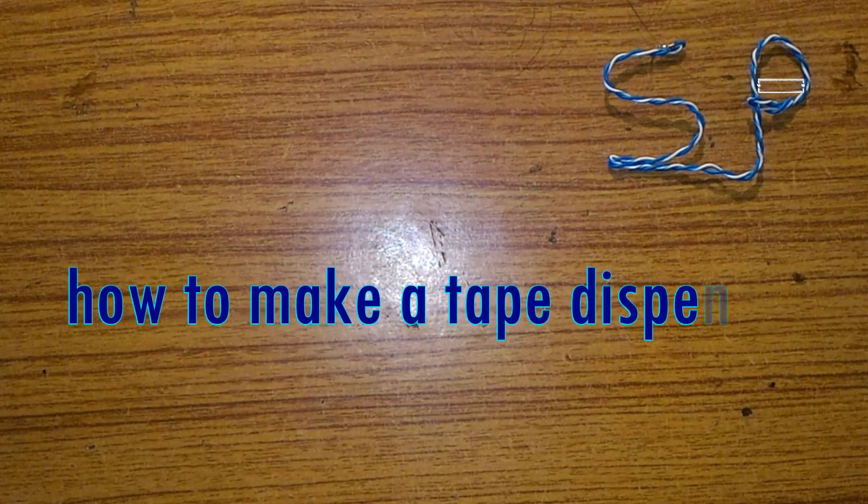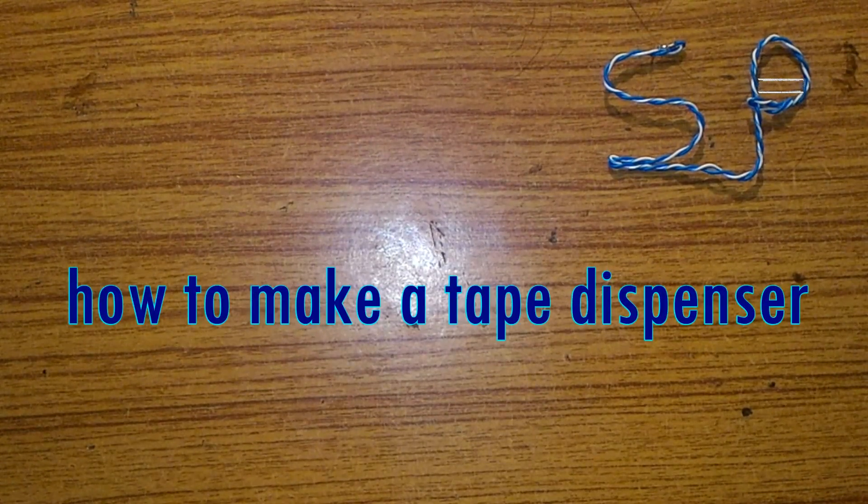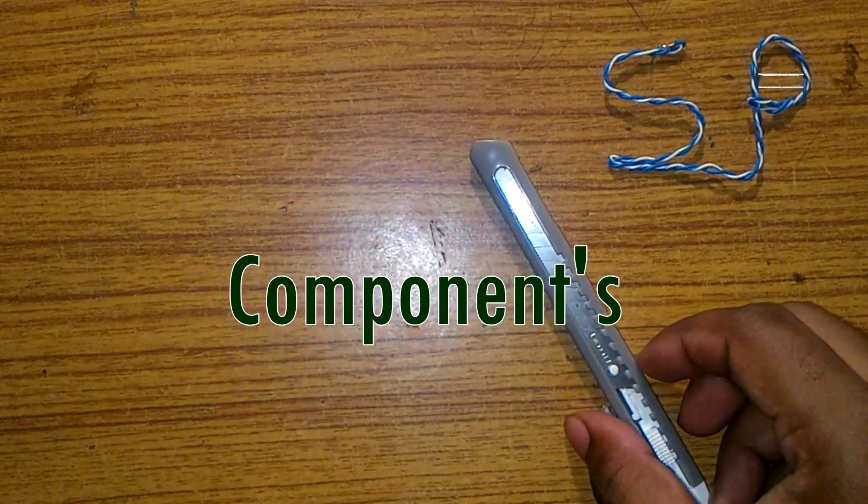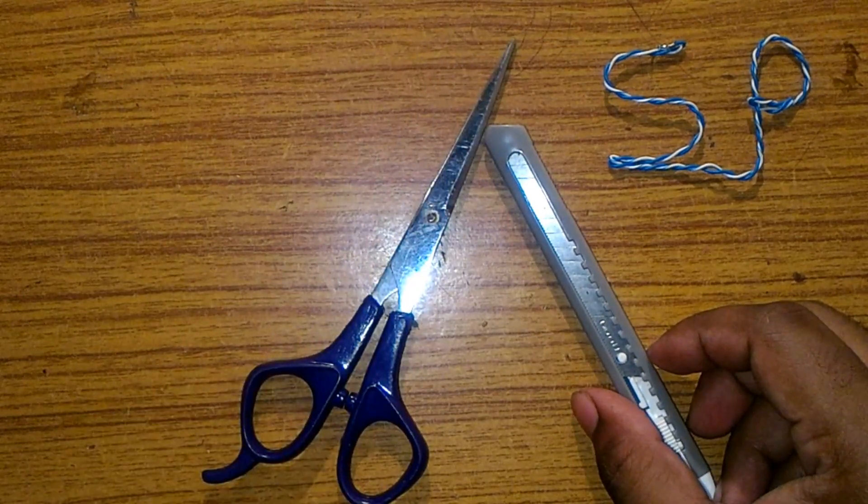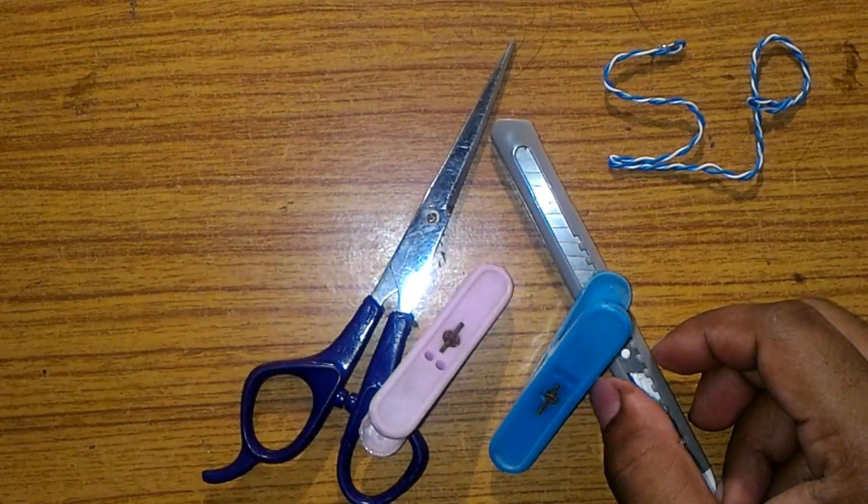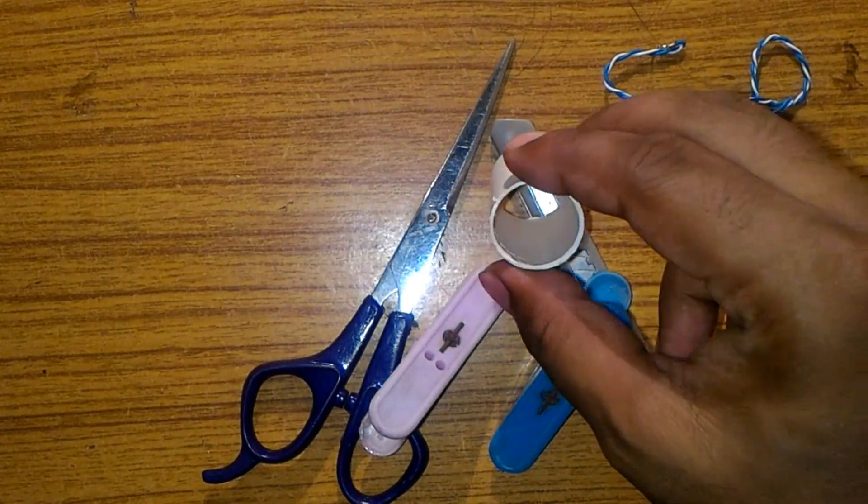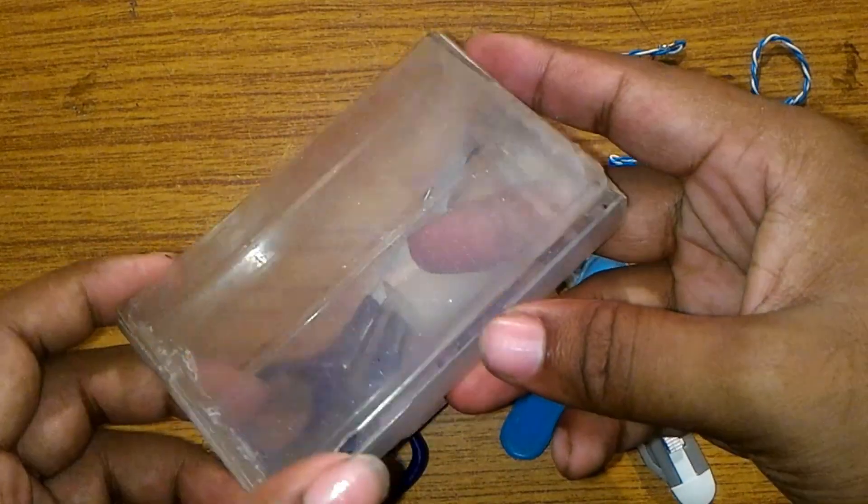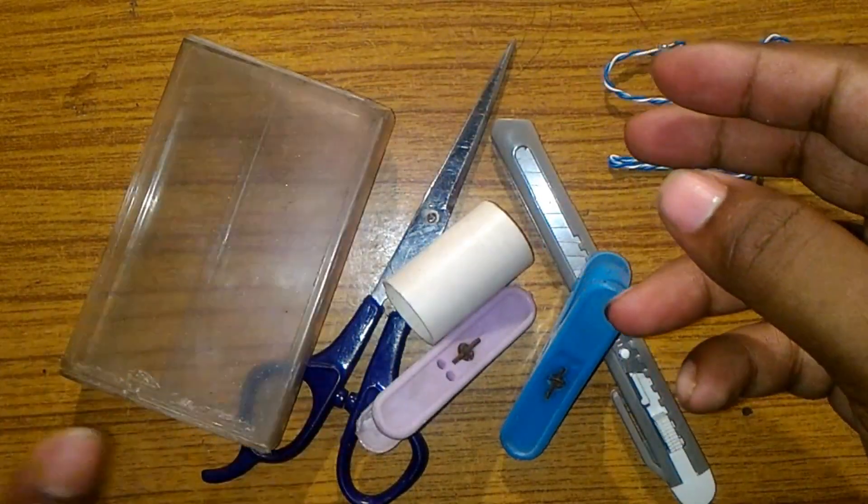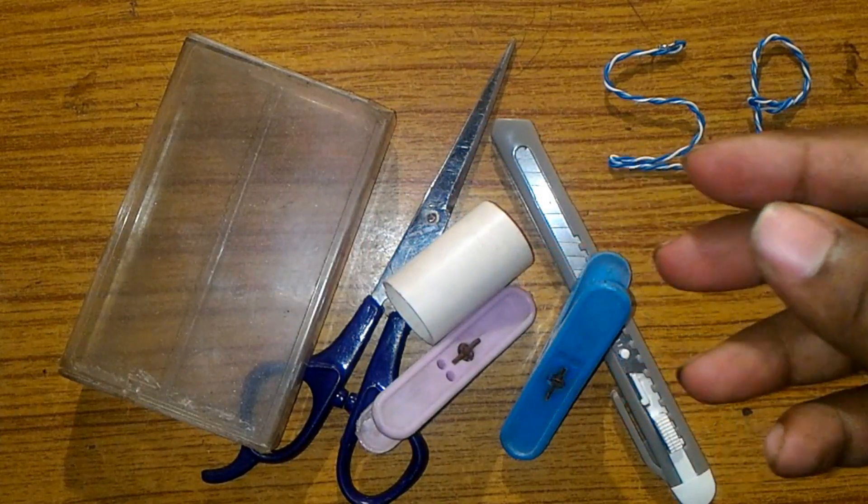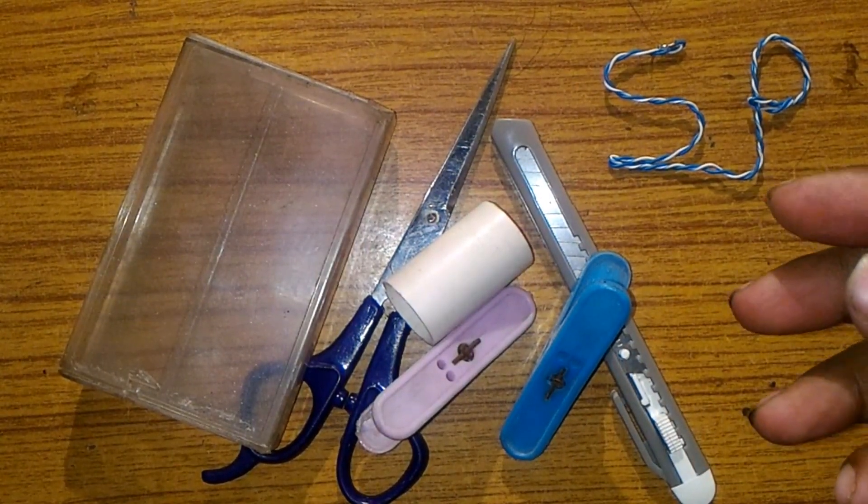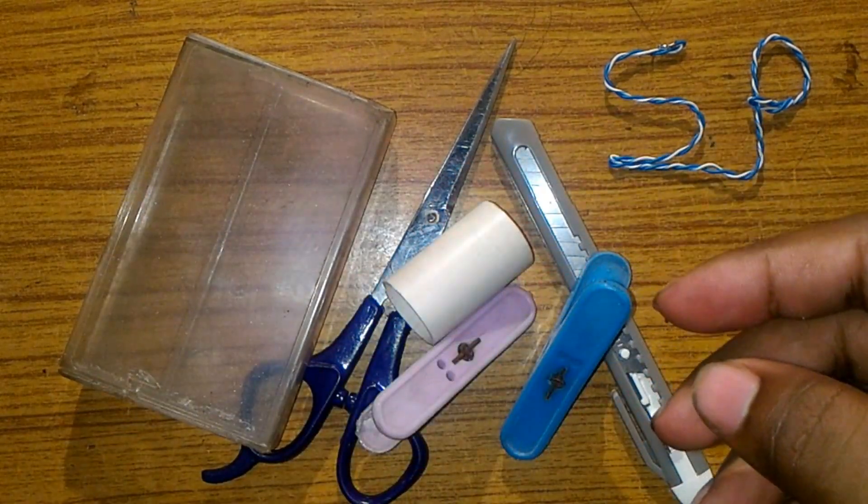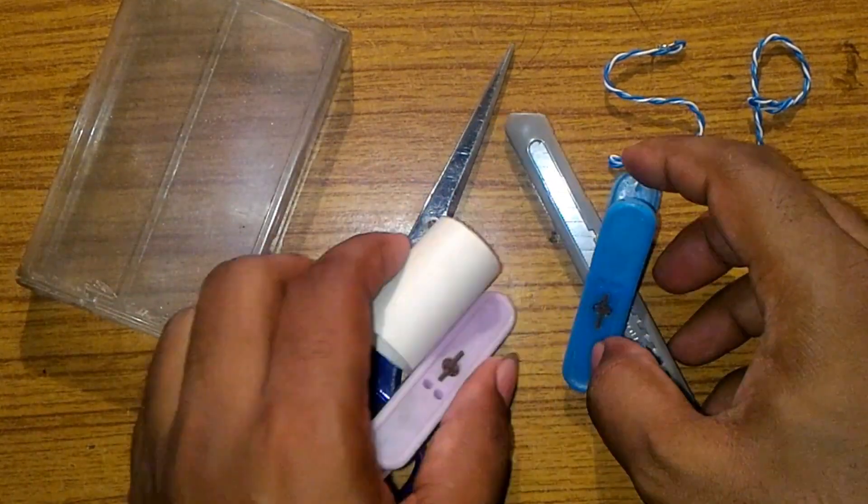Hello friends, today I am making a tape dispenser. Components required: knife, scissor, clip, small piece of PVC pipe, empty box of old cassette tape, and small piece of hexoblade. Okay, so let's make it.